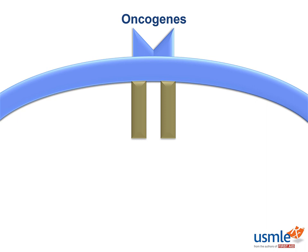Categories of oncogenes include growth factors, growth factor receptors, signal transducers, nuclear regulators, and cell cycle regulators. Let's take a look at each one closely.